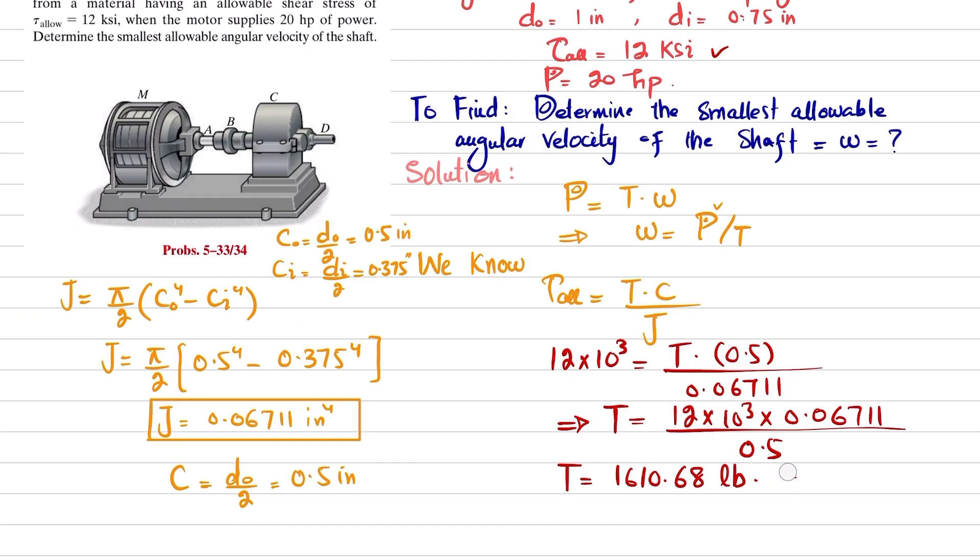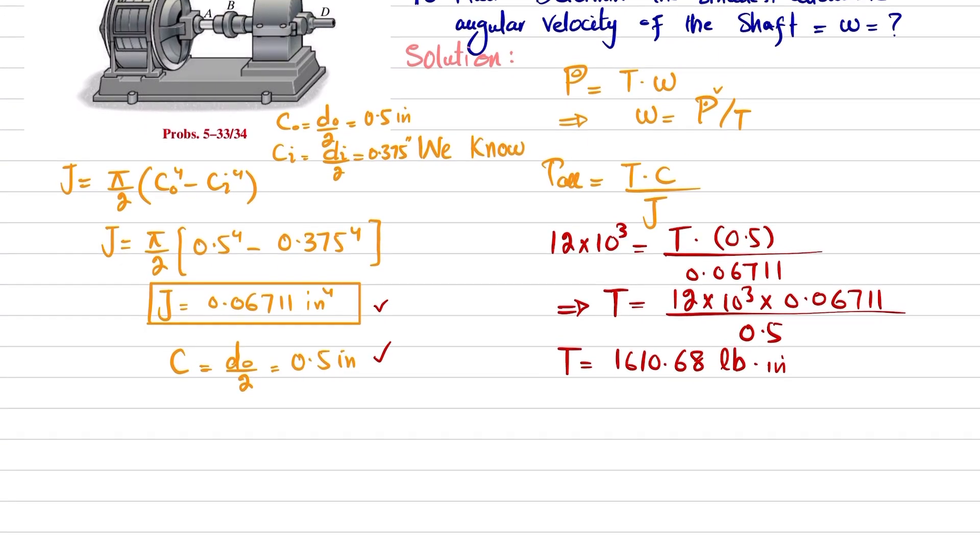So we will get this. Now we will convert this torque. T is equal to 1610.68 pounds, and one inch is equal to 1 over 12 feet. So torque will be converted into 134.22 and now unit is pounds into feet.